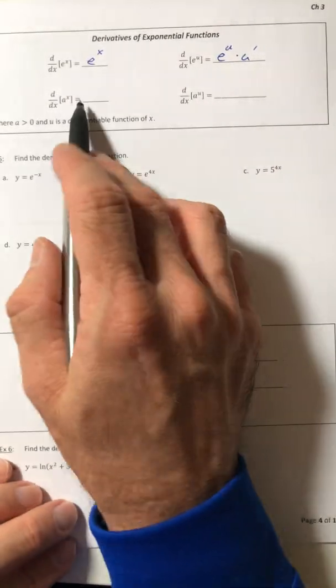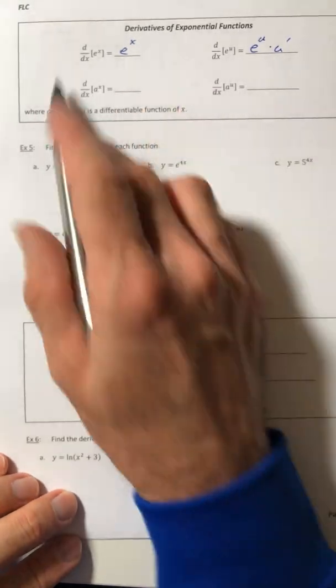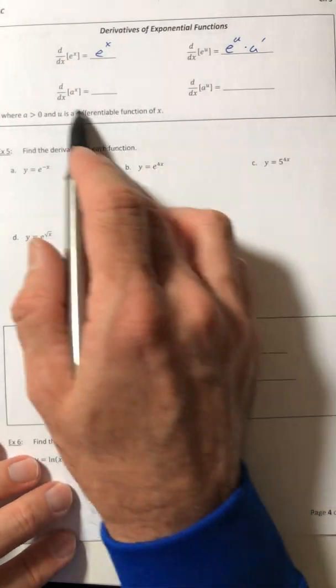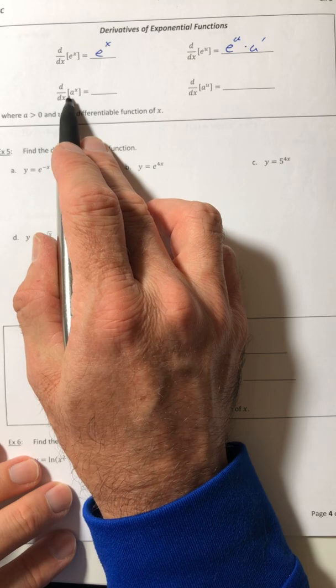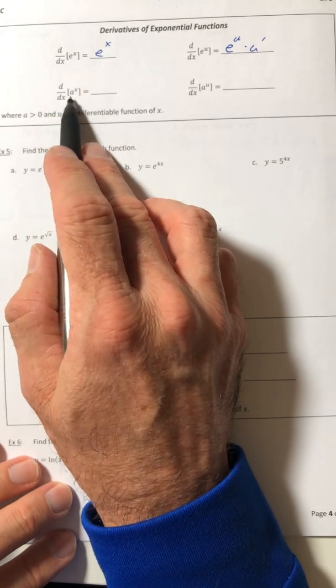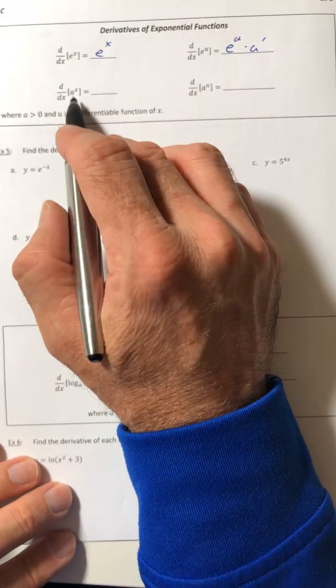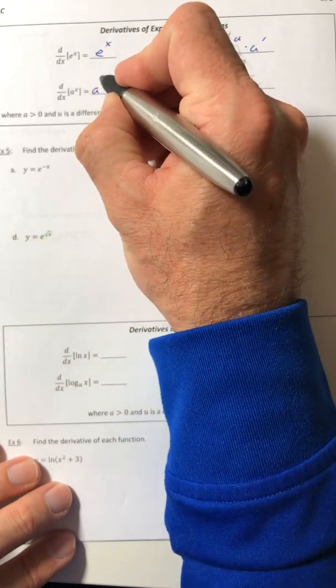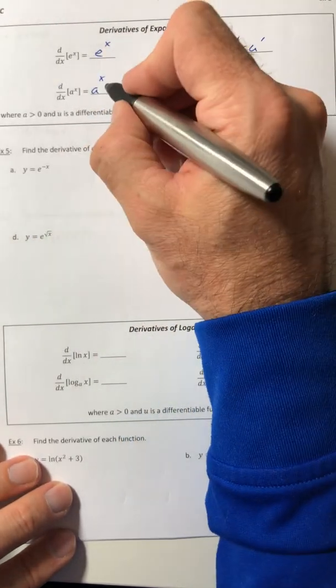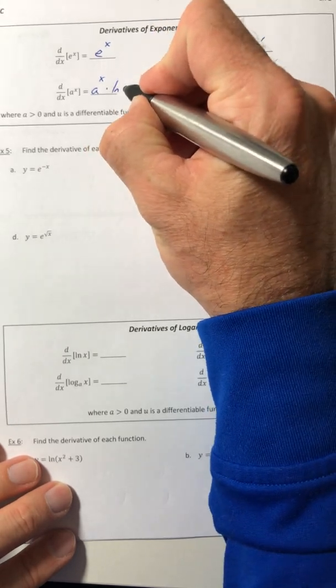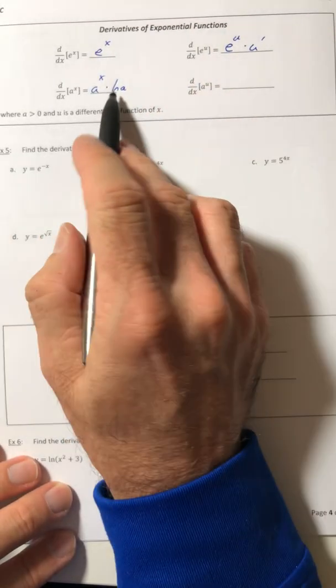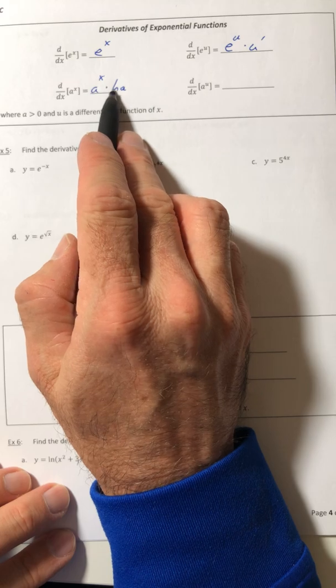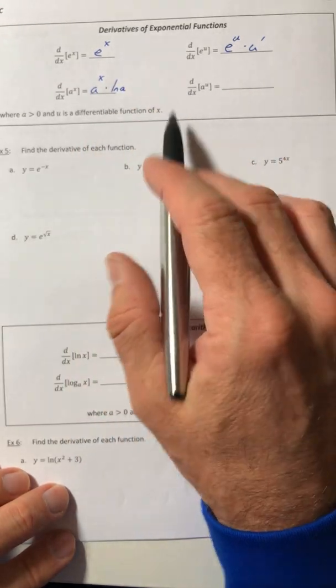Okay, so we can now generalize it to any type of exponential function. So when the base is something other than e, if it's something other than e, its derivative is a to the x times ln of the base. And when it was e, it would be like ln of e which is still just one, so it's still applied in here, you just again didn't see it.